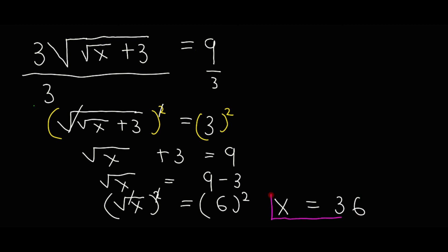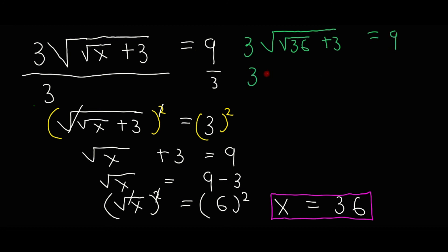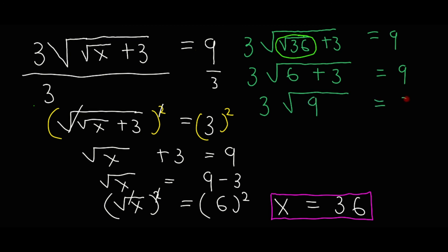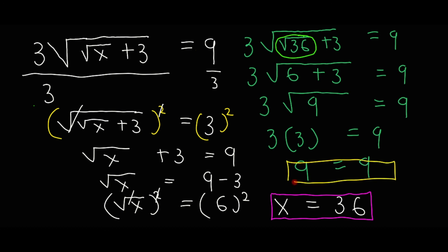We verify by substituting x equals 36: 3 times root of root 36 plus 3 equals 3 times root of 6 plus 3 equals 3 times root of 9 equals 3 times 3 equals 9. So 9 equals 9. Left-hand side equals right-hand side. Therefore x equals 36 is our answer. That's it for this tutorial.